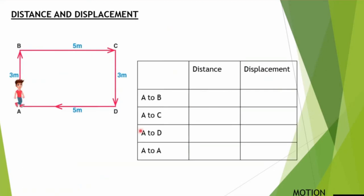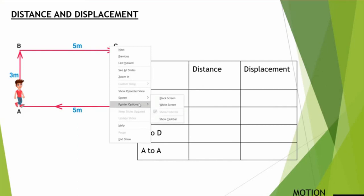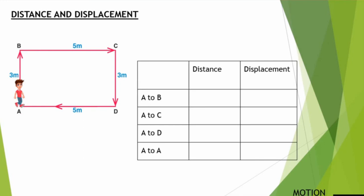Now let's solve a question related to this so the concept is clearer. There is a boy who travels from point A to point D and back to A in a clockwise form. We have to find distance and displacement for various cases. For A to B, the distance would be 3 meters, and the displacement would also be 3 meters since the initial and final positions match. For A to C in a clockwise direction, the distance is AB plus BC, that is 8 meters.